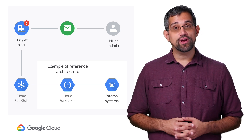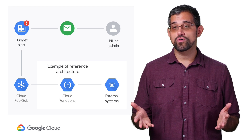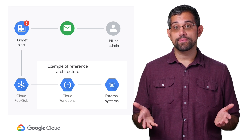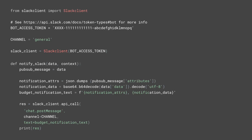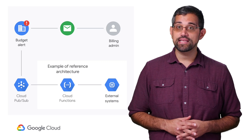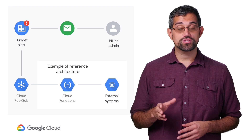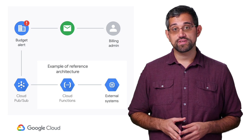Now that you're writing code with this information, you can pretty much do anything the Google Cloud Platform API will let you do. One very common example is to post an update to Slack or other platforms, connecting any tools your team uses to stay on top of your costs. This keeps people up to date, but we can also automate direct cost controls to respond to these notifications.